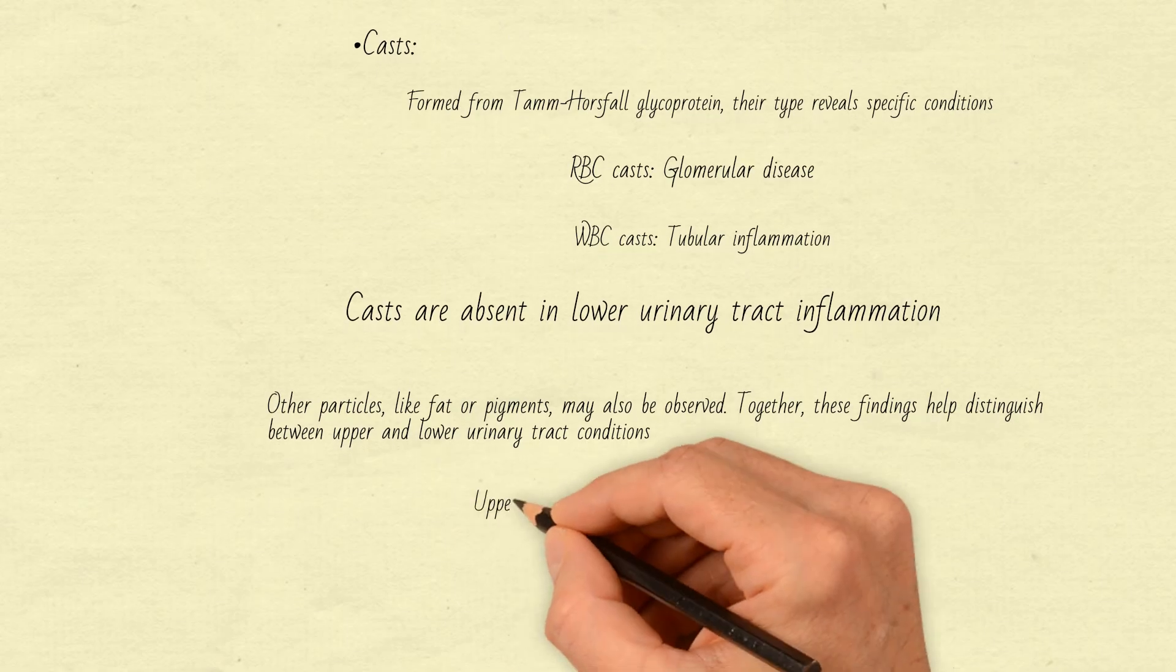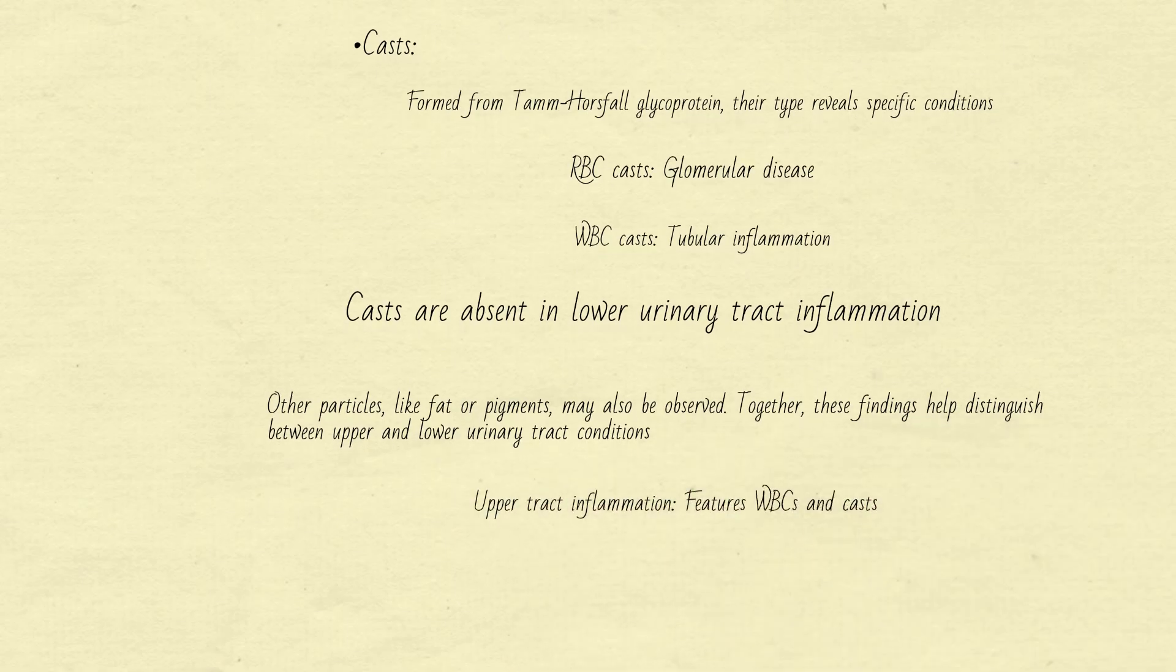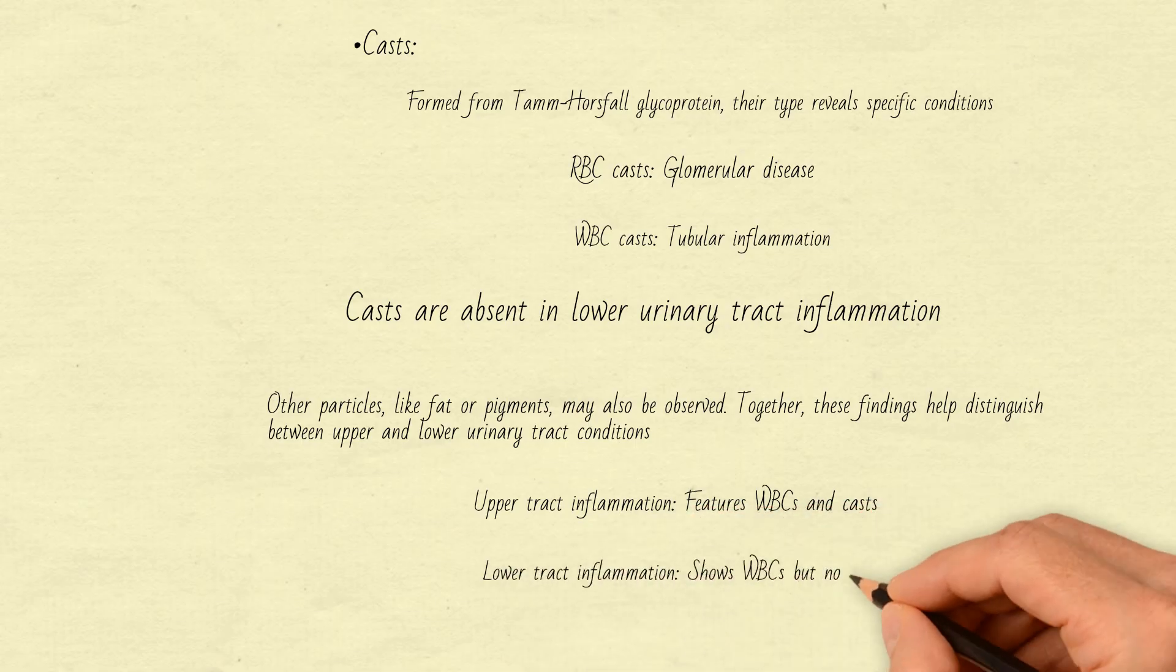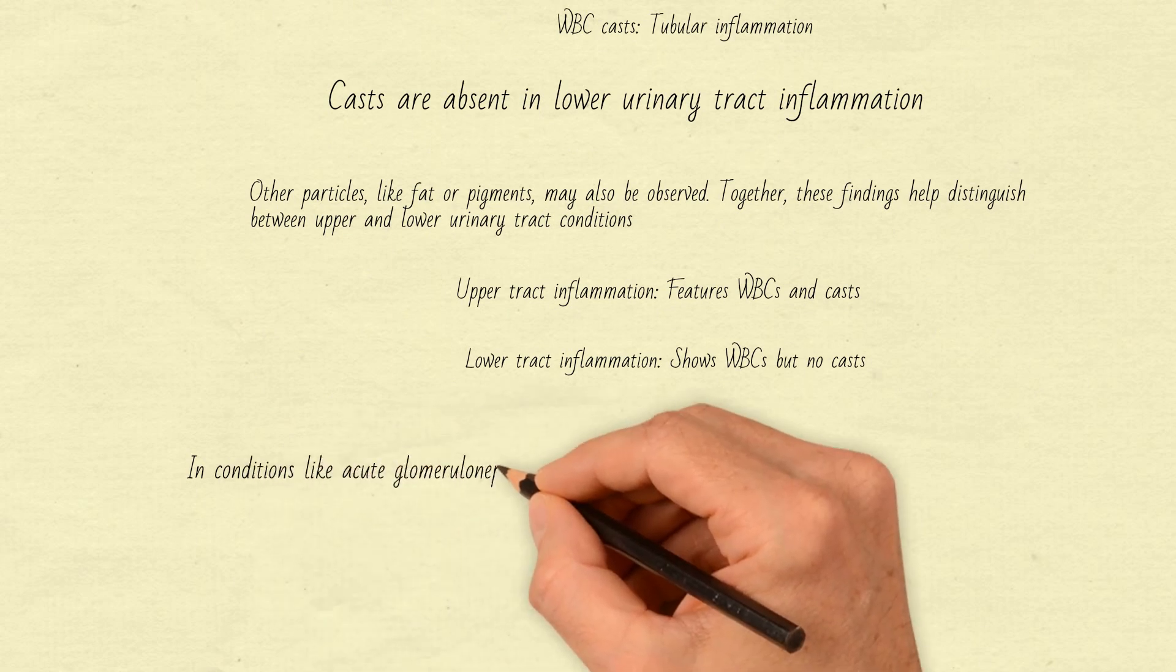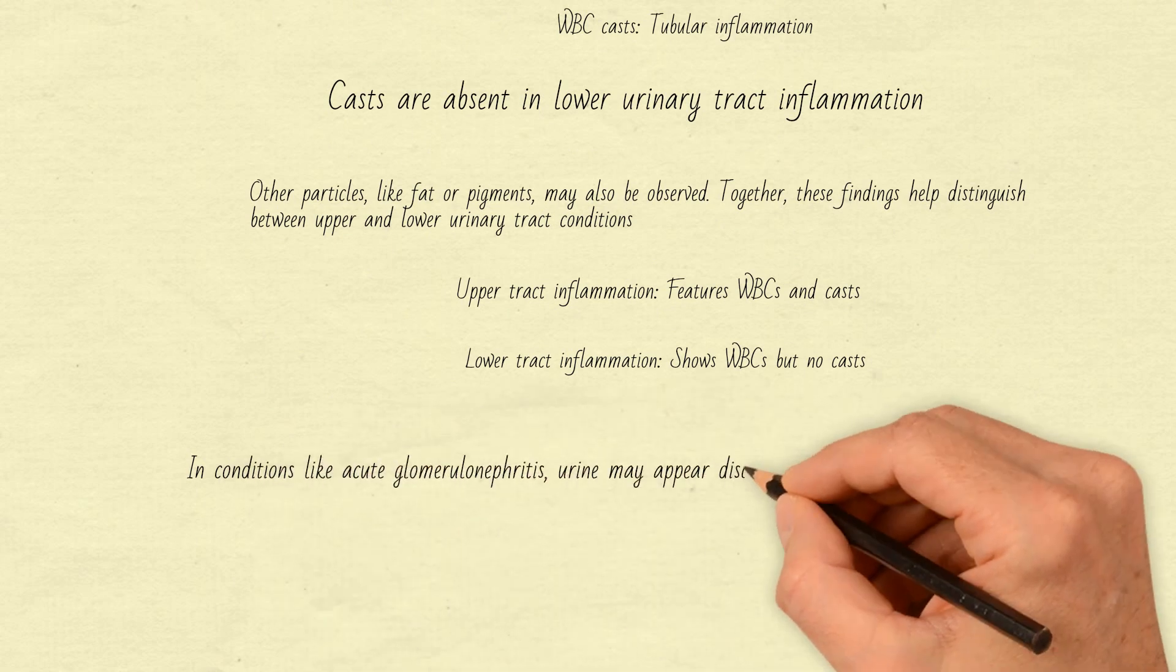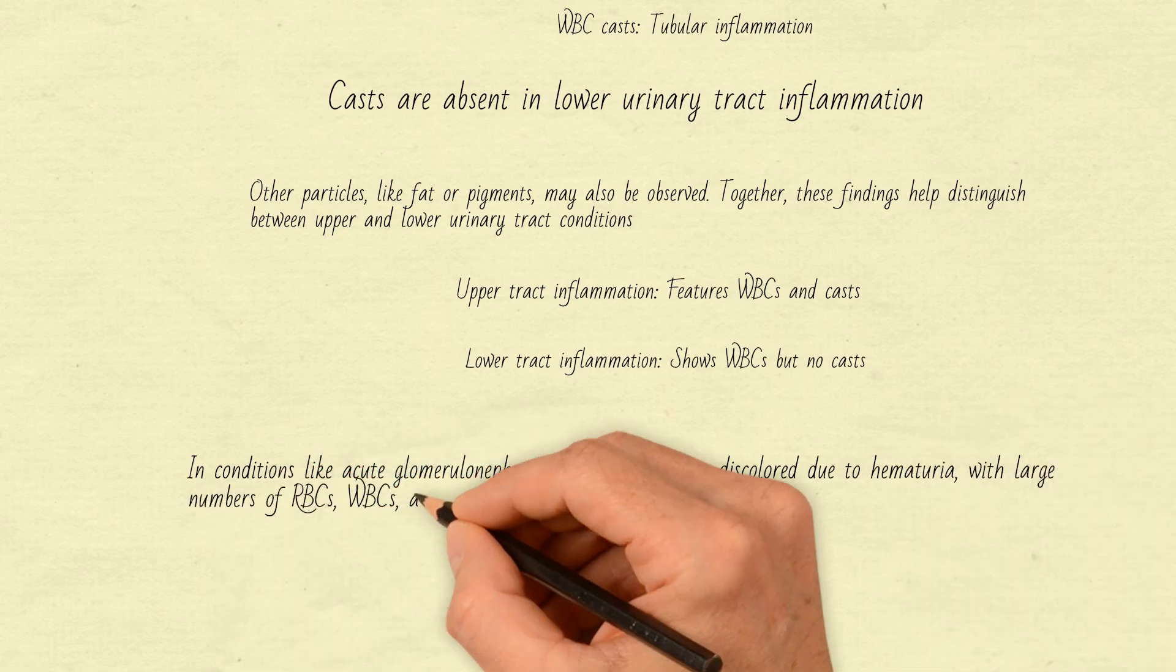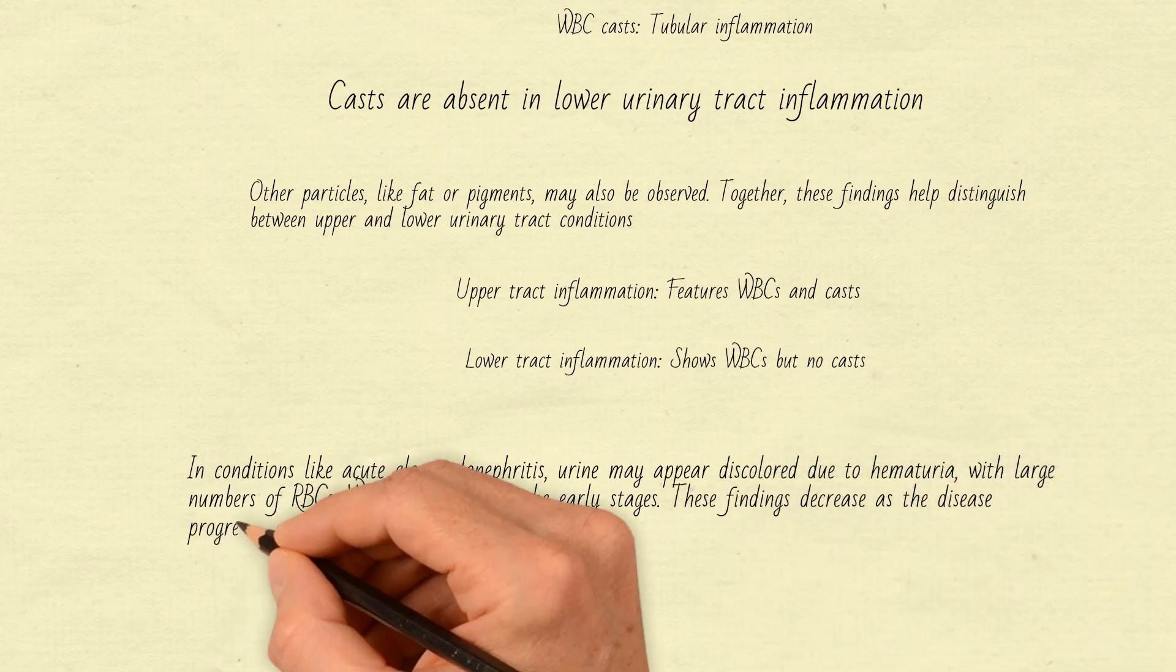Upper tract inflammation features WBCs and casts. Lower tract inflammation shows WBCs but no casts. In conditions like acute glomerulonephritis, urine may appear discolored due to hematuria, with large numbers of RBCs, WBCs, and casts in the early stages. These findings decrease as the disease progresses.